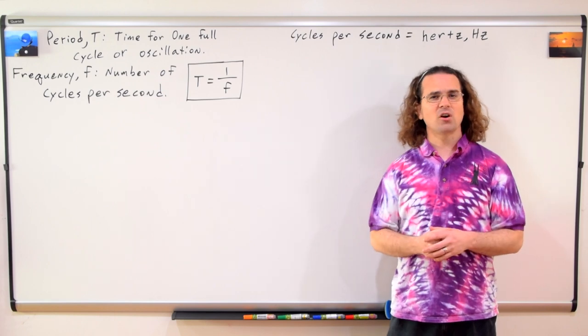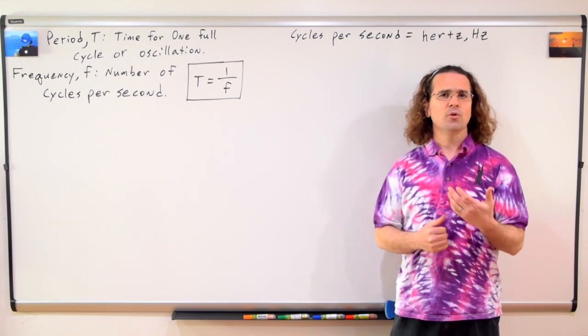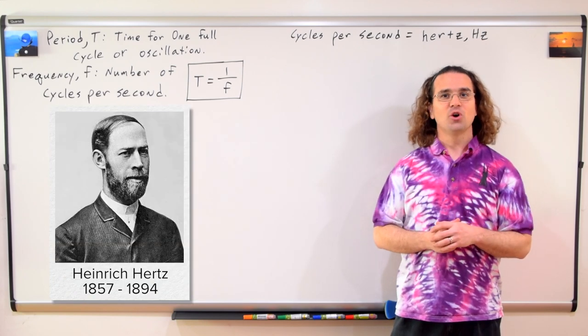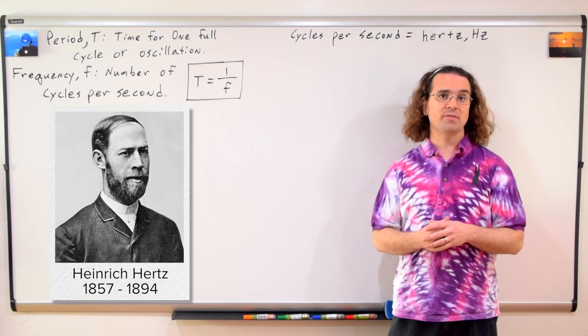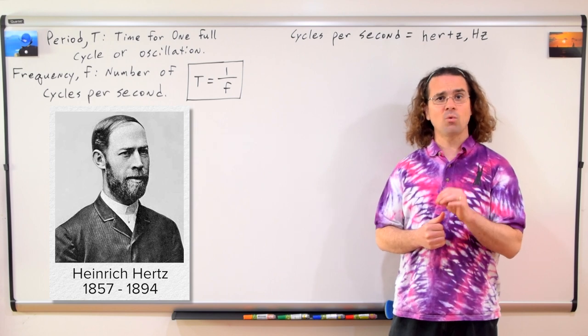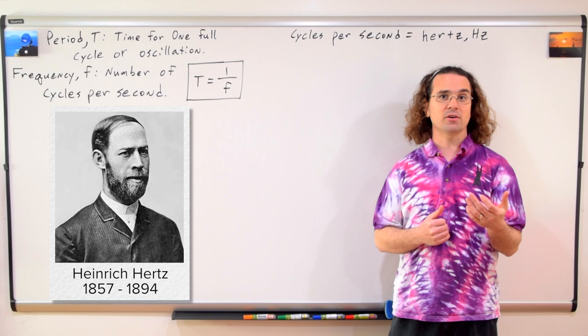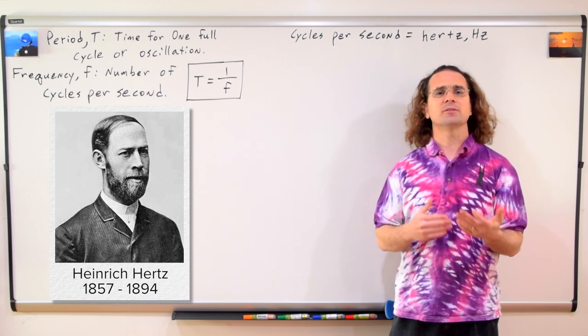Cycles per second are called Hertz or Hz, which are named after the 19th century German physicist Heinrich Hertz, who was the first to give conclusive proof of the existence of electromagnetic waves, which were theorized by James Clerk Maxwell's electromagnetic theory of light, which we will learn about later.